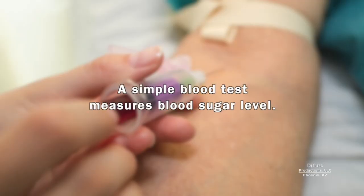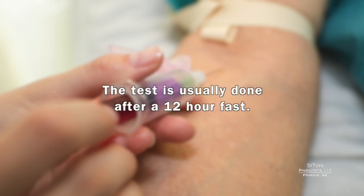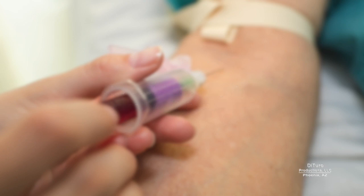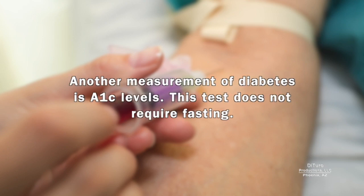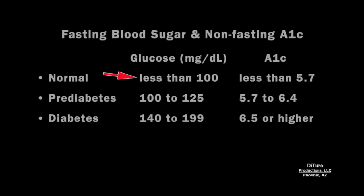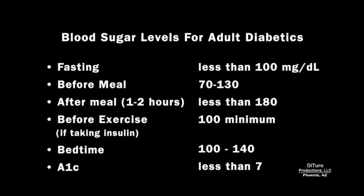A simple blood test measures blood sugar levels, usually done after a 12-hour fast. Another measurement is A1C levels, which does not require fasting. Normal fasting blood glucose is less than 100 milligrams per deciliter, or an A1C level less than 5.7. For adults with diabetes, fasting blood sugar should be less than 100 milligrams per deciliter and A1C less than 7.